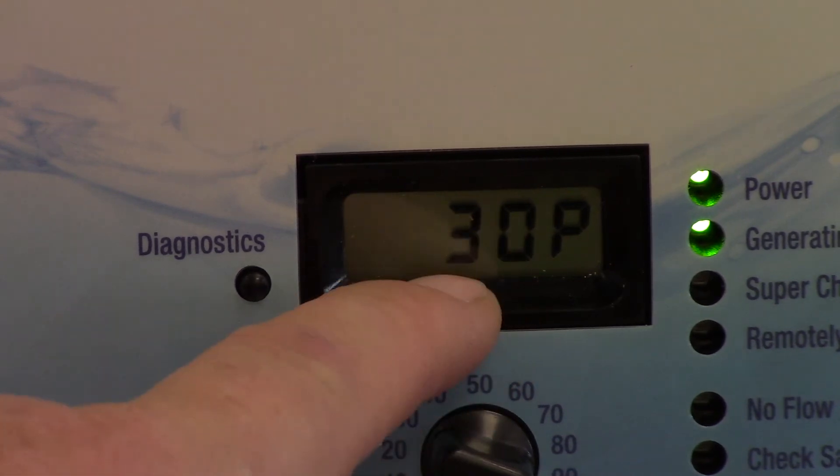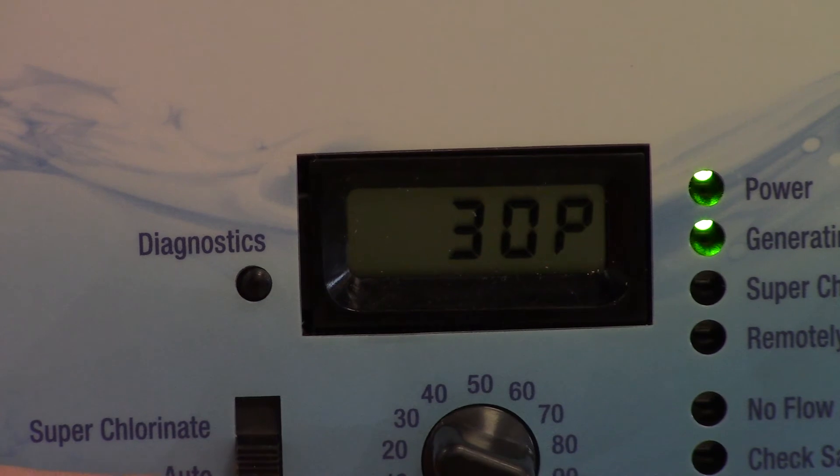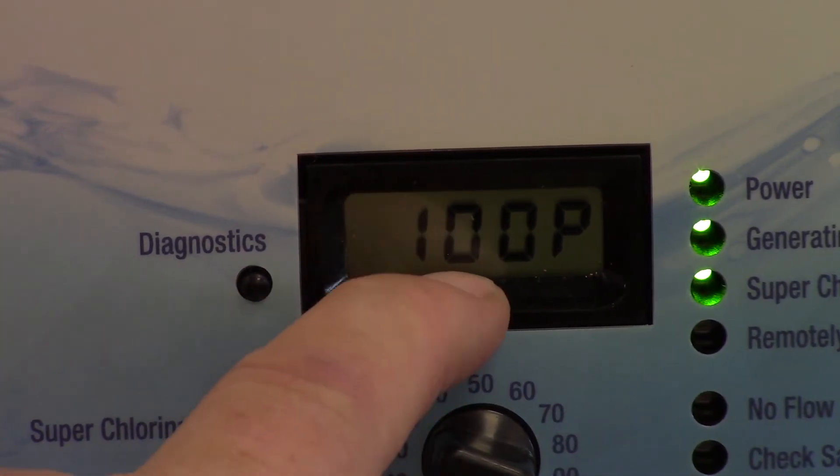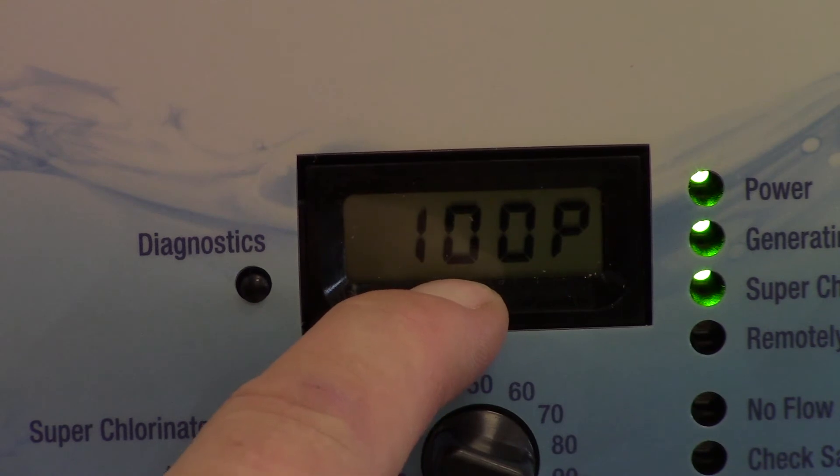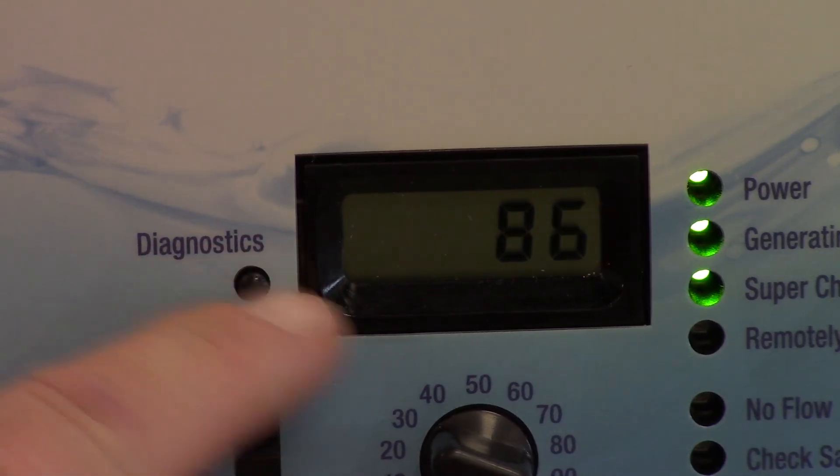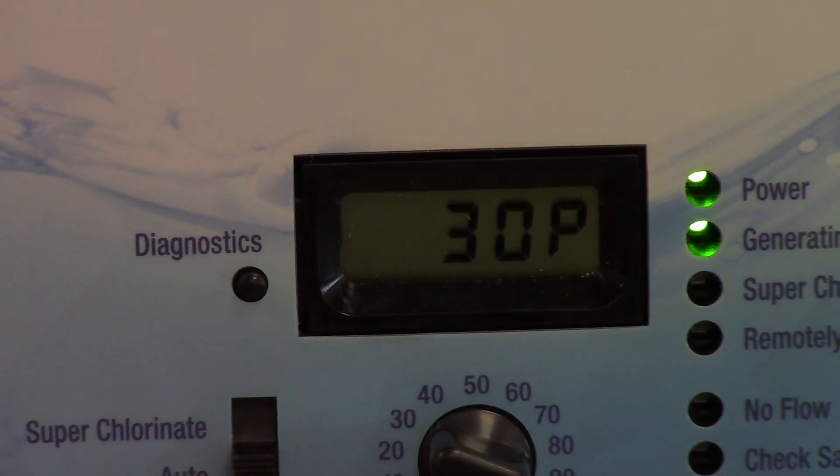Now the next thing is if you put the system on super chlorinate you'll notice that that goes up to a hundred percent. So it's going to run on the super chlorinate cycle for 24 hours at a hundred percent and then it's going to drop back down to its regular percentage after that period of time. But you still need to come and switch the button down. A lot of people don't do that.